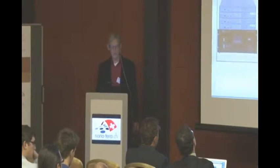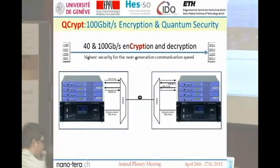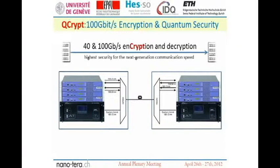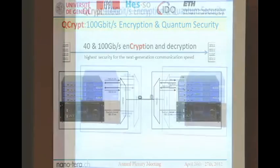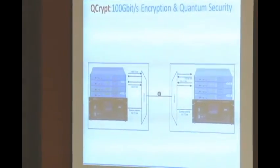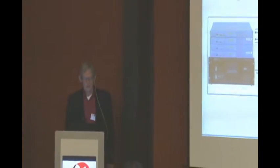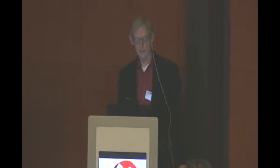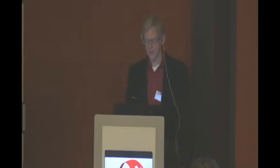Our system QCrypt consists of two parts. This is just an example — it doesn't exist like this yet. There is the quantum key distribution system at the bottom, and these boxes stand for the 100 gigabit per second encryption system. There are several of them which can be connected to the quantum key distribution system, which will provide the very secret keys to the other systems. Our project aims to have 40 and 100 gigabit per second encryption and decryption with the highest security possible for the next generation communication systems.